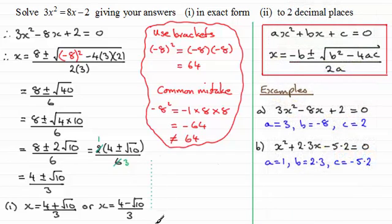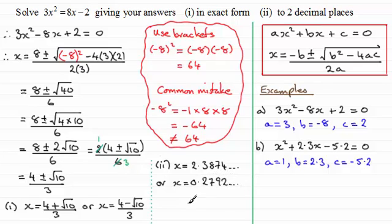Now when it comes to giving your answers to two decimal places, clearly you're going to need to use a calculator. So if you take this first answer for x, 4 plus root 10 over 3, you'll find it comes out to be 2.3874 and so on. And for the other value, x equals 0.2792 and so on. So therefore, x equals 2.39 or 0.28 if we give both to two decimal places.